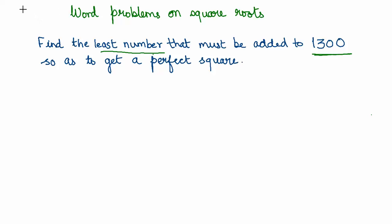As a first step, we would try to find out whether 1300 is a perfect square or not using the long division method. So we write 1300, we pair the numbers, and then we begin with the division as explained in earlier videos.